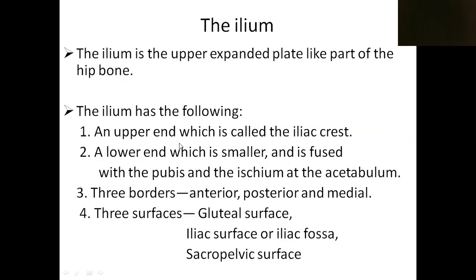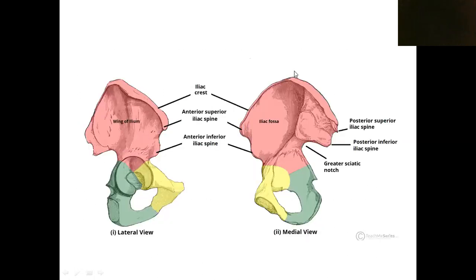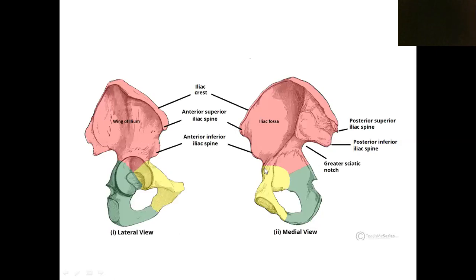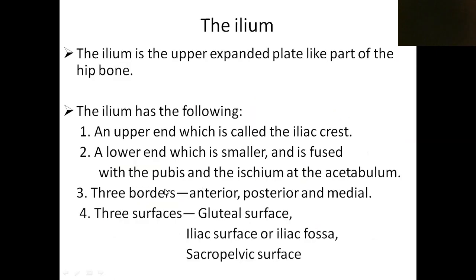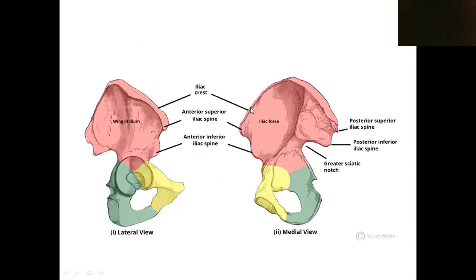The upper end, otherwise known as the iliac crest, has two projections. The anterior end of the iliac crest has a projection known as the anterior superior iliac spine, and the posterior end has a projection known as the posterior superior iliac spine. The lower end fuses with the pubis and ischium.